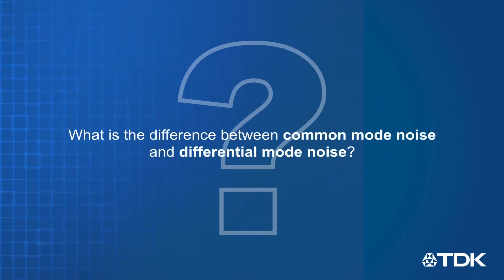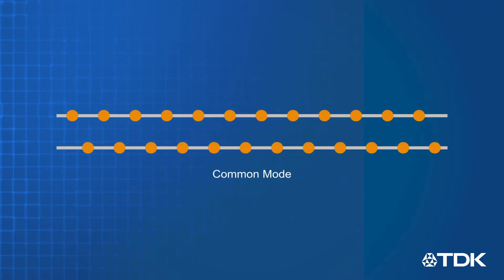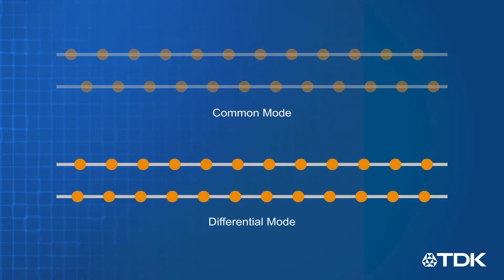What is the difference between common mode noise and differential mode noise? Common mode refers to noise currents that flow in the same direction in a pair of conductors, while differential mode, or normal mode, refers to noise currents that flow in opposite directions in a pair of conductors.